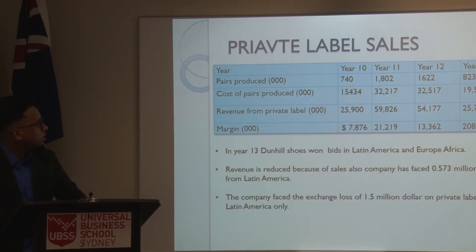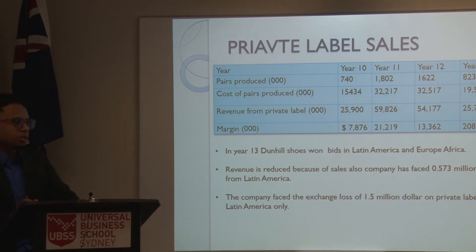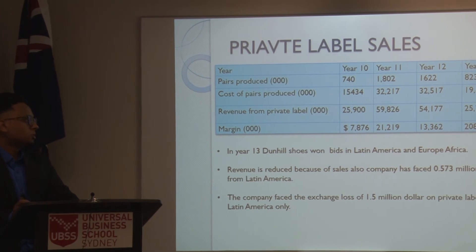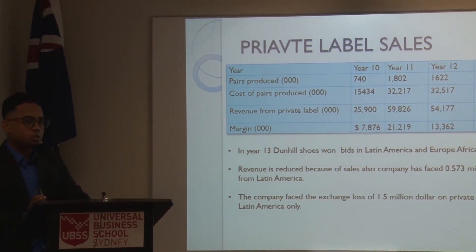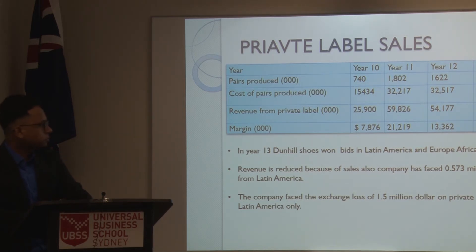Looking at private label sales, there is quite a big number in year 11 — which was 1,800. We produced that much because, as I mentioned, we won the bids, and to meet the demand of customers in the market we had to produce more shoes. Unfortunately in year 13, we produced only 823 million in private label shoes. The reason was we won the bids but weren't able to sell the shoes because of competitors' pricing and other factors. That's why we faced a loss of over 0.53 million in Latin America alone, and also a loss of $1.5 million from exchange. My colleague Ali will now elaborate on human resources.